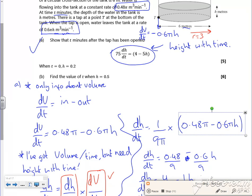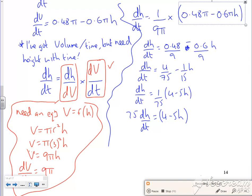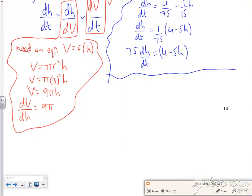Then when it says, when T is 0 and H is 0.2, find the value. So I want to do my integration, separation of variables and integrate for the second bit. So part B, it's up to you where you leave the 75, I'm just going to leave it there. It's just a constant, and that's divided by 4 minus 5H, dH is 1 dT, integrate it.